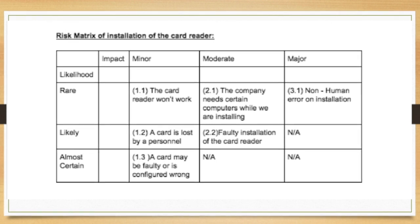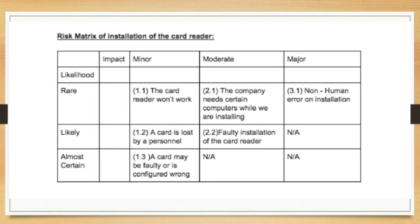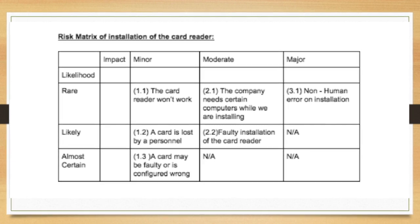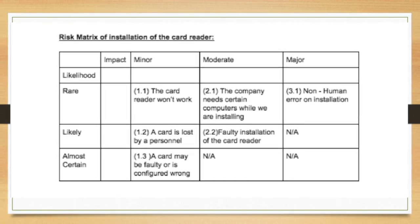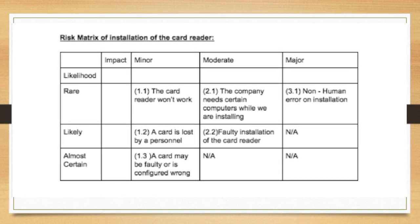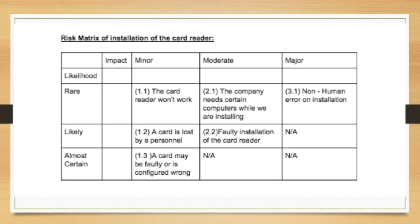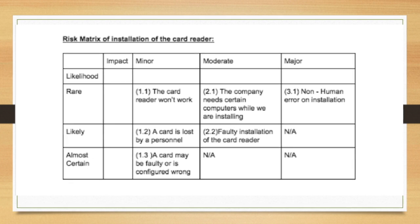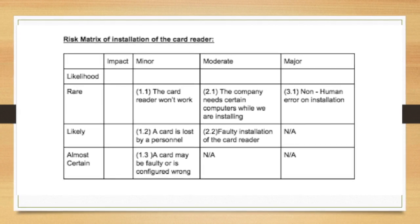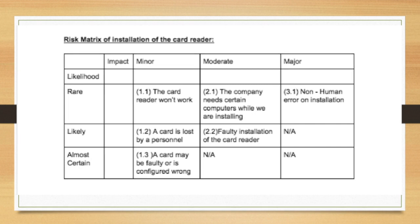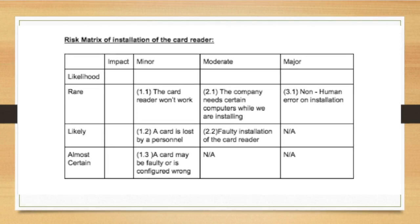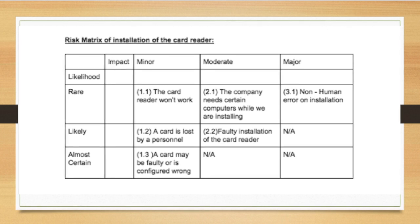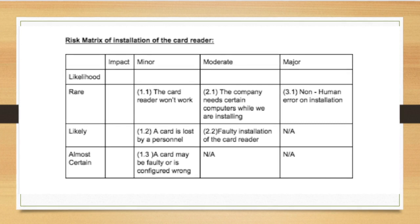At low likelihood and moderate impact, we have the company needing certain computers while we are installing. If this happens, we will postpone the installation of the device to a later date. At medium likelihood and moderate impact, we have faulty installation of the card reader. If this happens, the reader should be replaced and the broken one will be brought in to understand why it was faulty. At low likelihood and major impact, we have non-human error on installation. If this happens, the installation should be redone and the reason for the breakdown should be noted for the future.